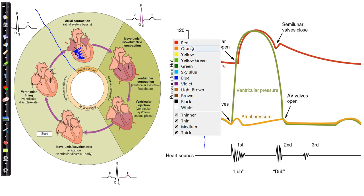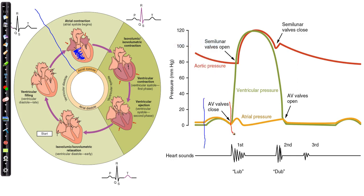At the point where the AV valve closes, we see a very sharp rise in ventricular pressure — that marks the beginning of isovolumic contraction. During isovolumic contraction, all four valves are closed: the AV valves are closed and the semilunar valves are still closed. Pressure goes up very, very quickly with all four valves closed. That's our isovolumic contraction phase.